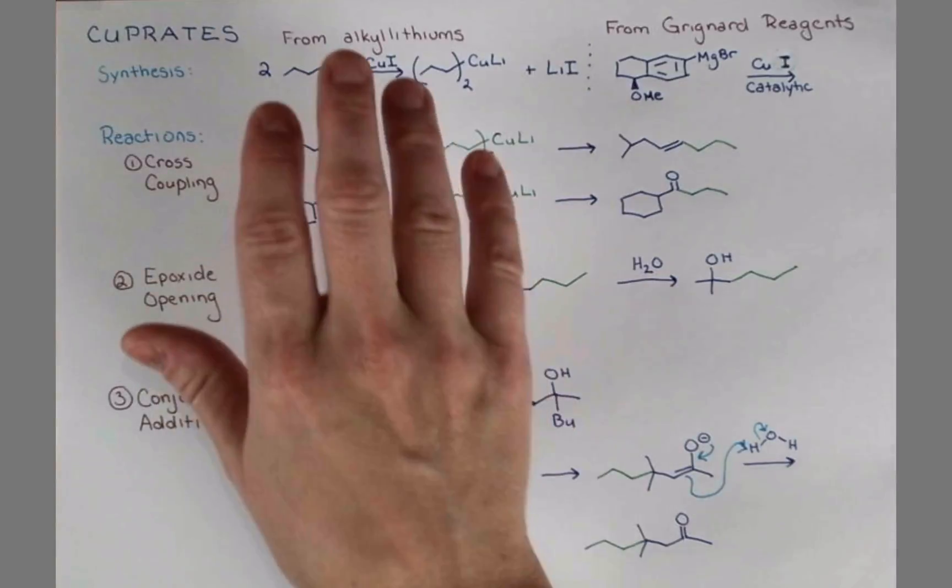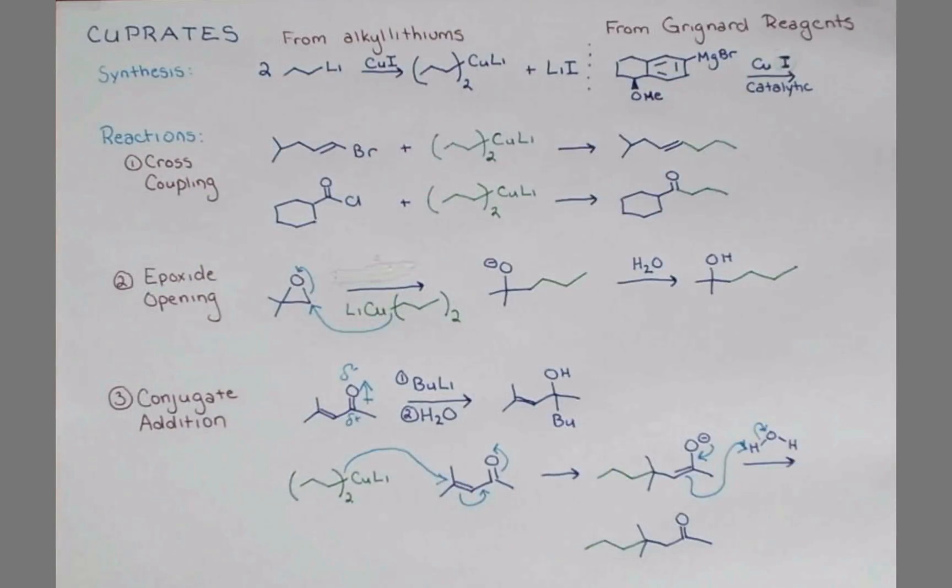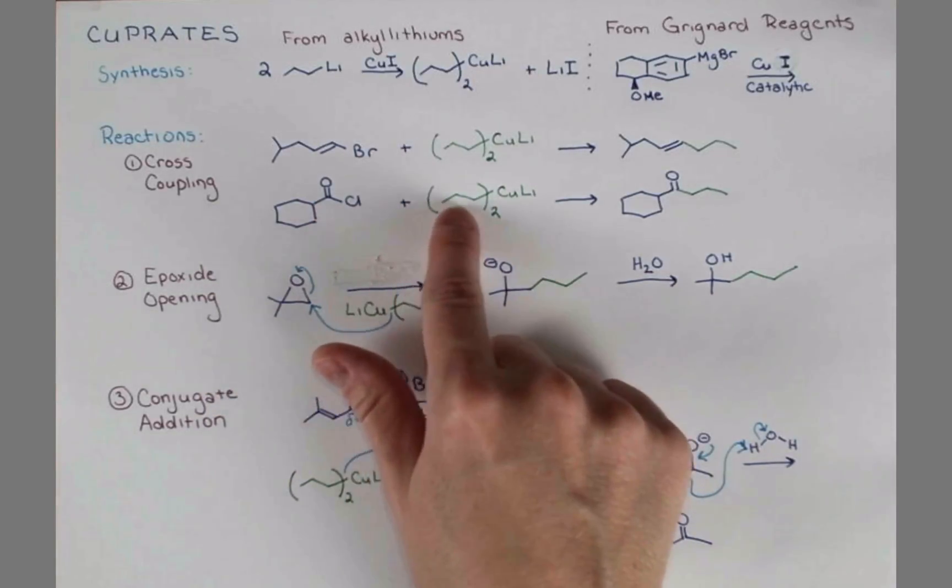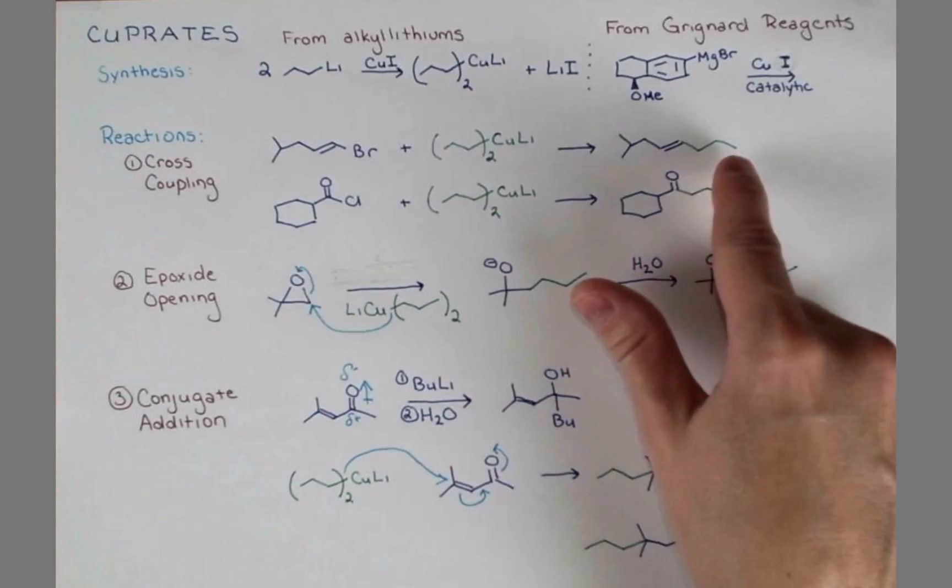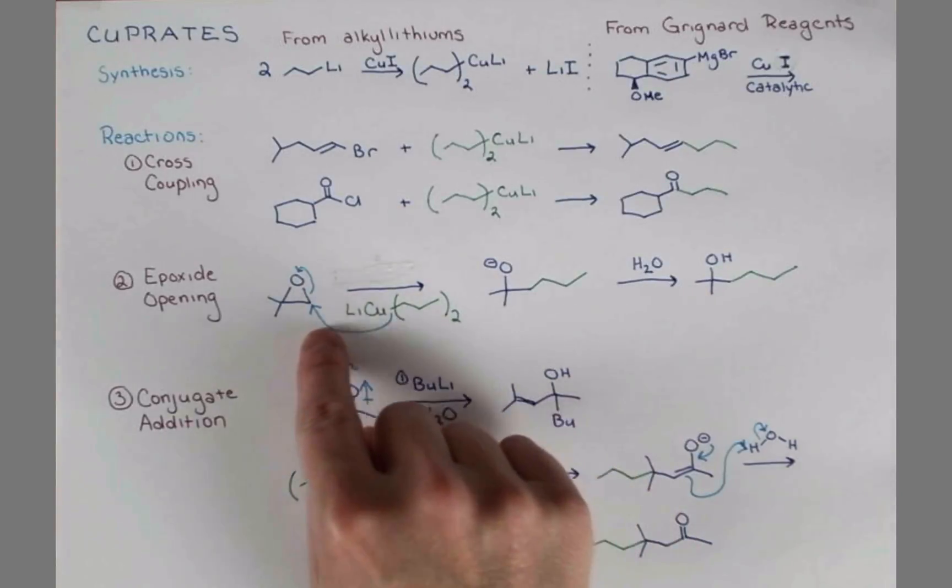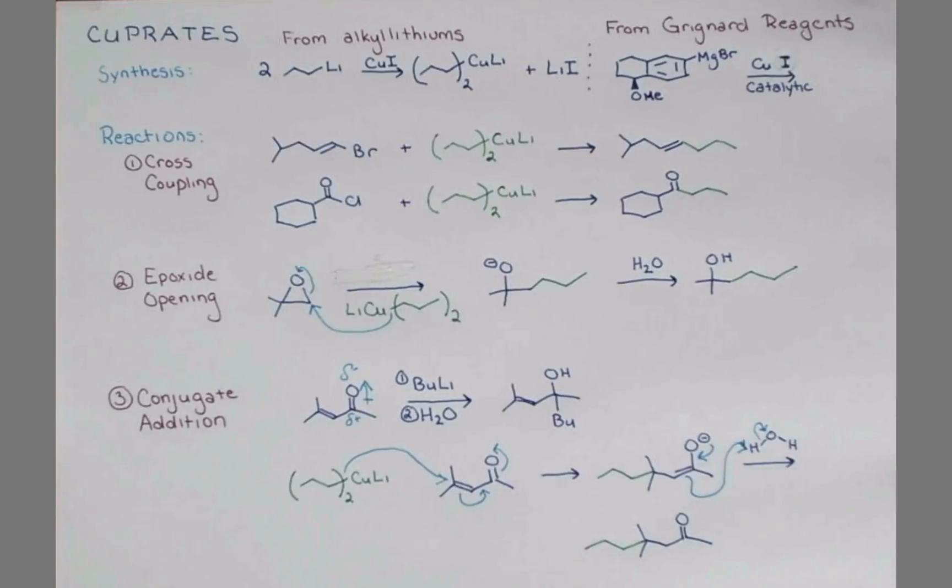To sum up, cuprates are organometallic reagents that can be made from other organometallic reagents. They have unique reactivity where they can take alkyl halides and couple them with another alkyl piece forming carbon-carbon bonds. Like alkyl lithiums and Grignard reagents, they can open epoxides at the least hindered side, producing alcohols. And finally, with enones, they have completely different reactivity, adding at this terminal carbon of the conjugated system instead of at the carbonyl.